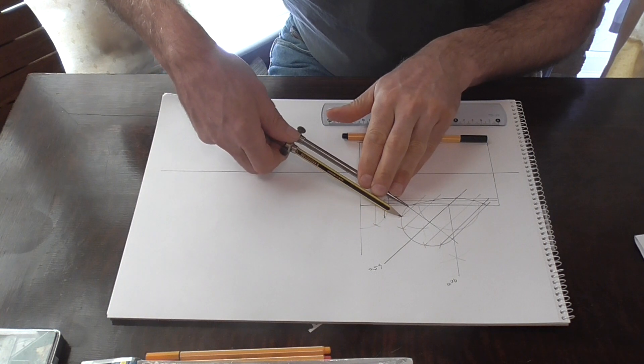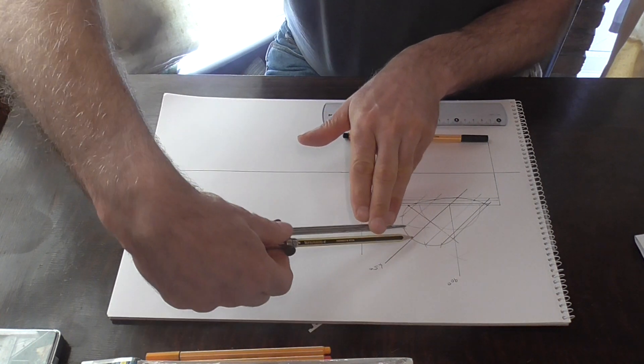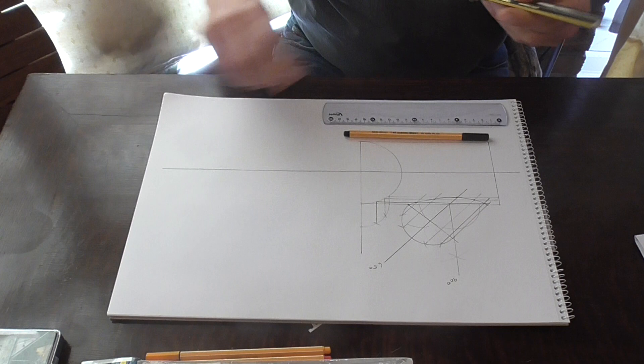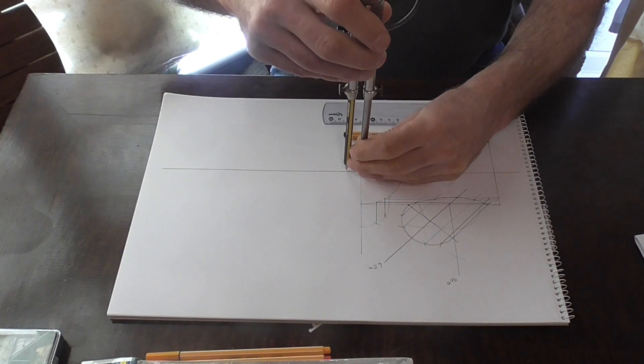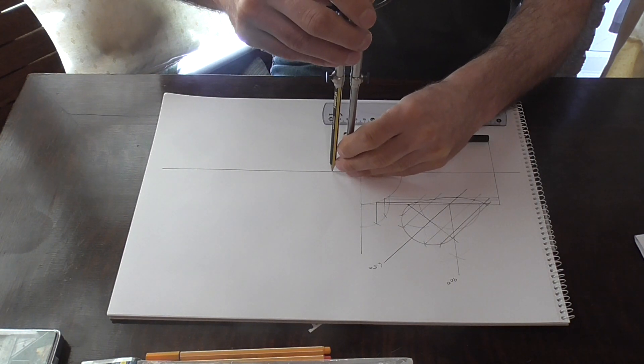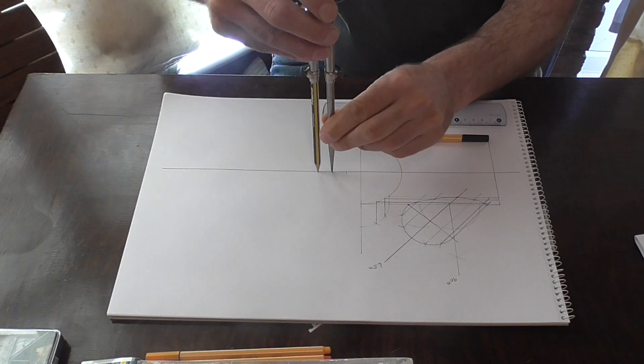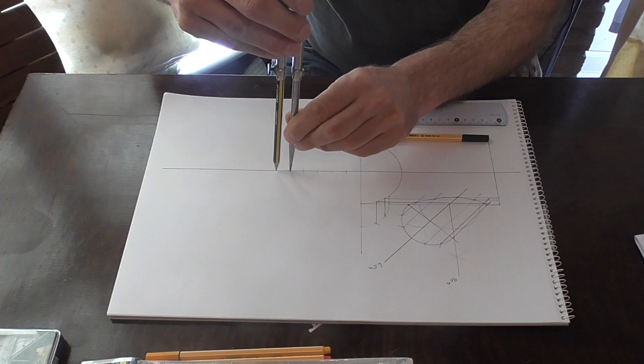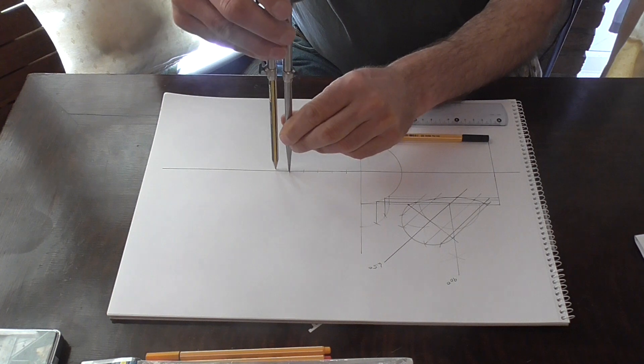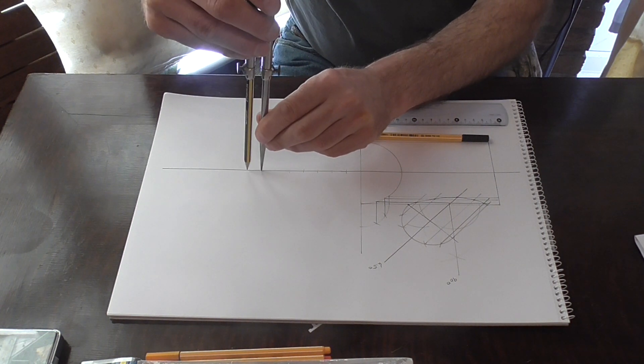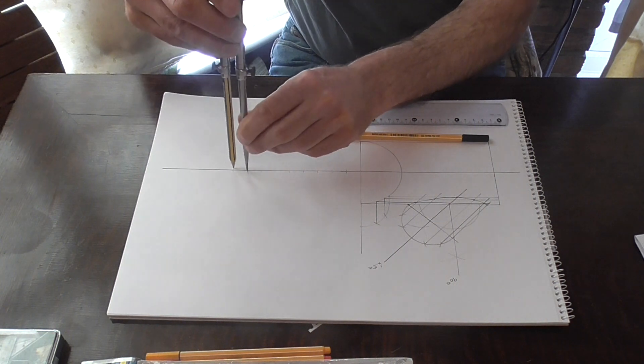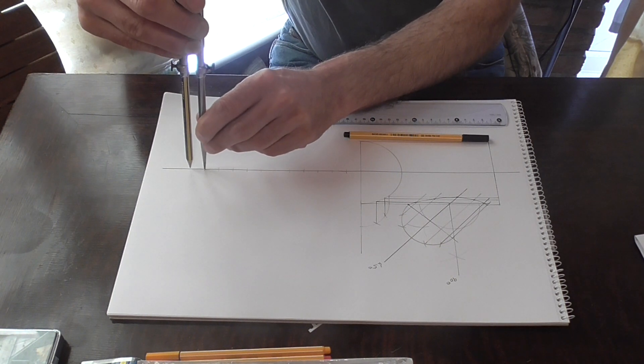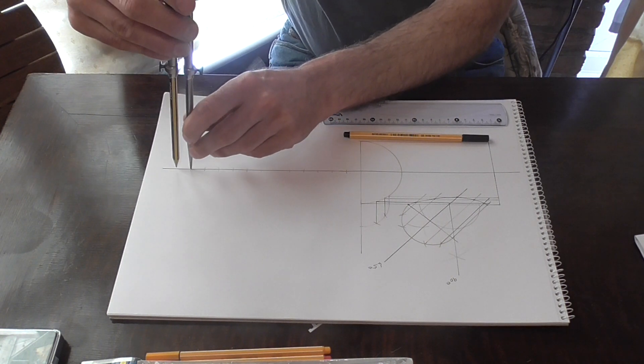So we're going to use 13 lines of construction. Take one of these measurements here. Absolutely perfect. So we need 13 lines of construction along there. Let's get started. That's 1, 2, 3, 4, 5, 6, 7, 8, 9, 10, 11, 12, and 13.